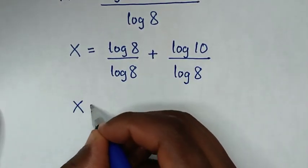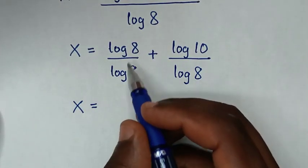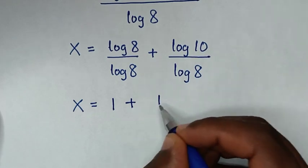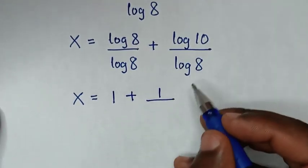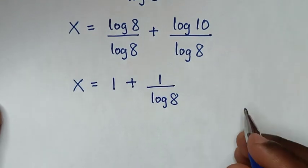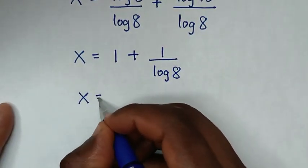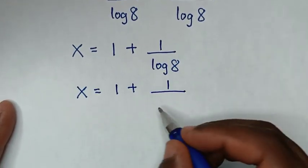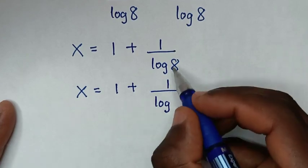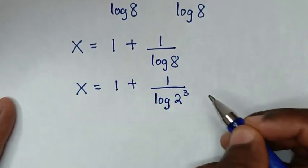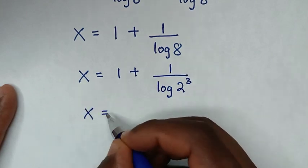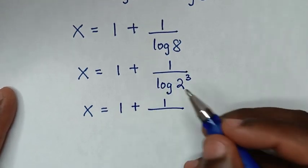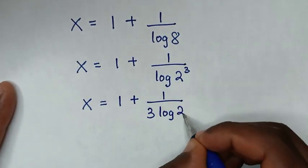Then it will be x is equal to: log of 8 divided by log of 8 is 1, then plus log of 10 divided by log of 8. Then it will be x is equal to 1 plus 1 over log of 8, and this log of 8 is the same as log of 2 to the power of 3.